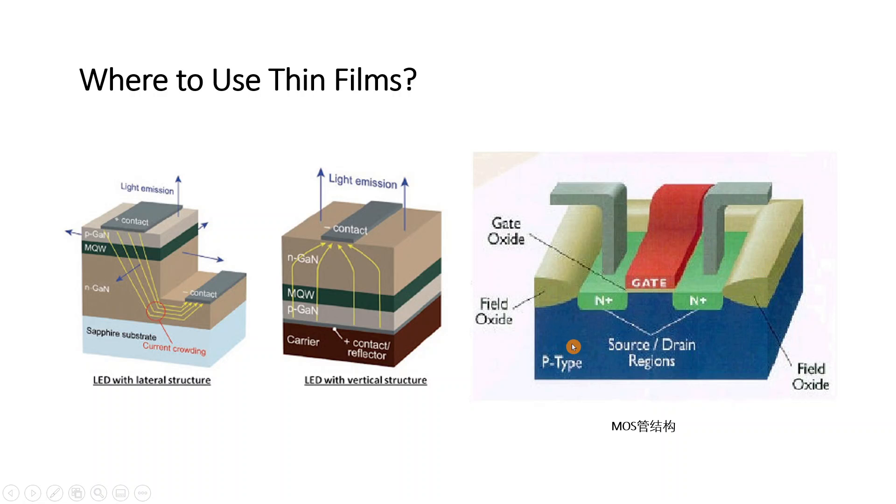So this one, the oxide, and here the semiconductor, that's a silicon, the P-type semiconductor wafer of silicon. So this is the MOS structure.